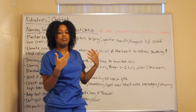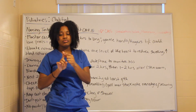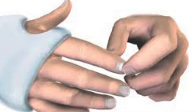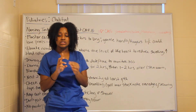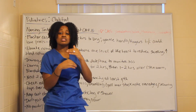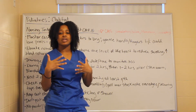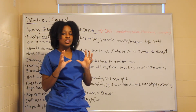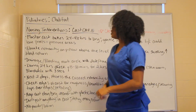Think of it like wrapping a string tightly around your finger — circulation becomes compromised, swelling occurs, color turns bluish, and sensation is lost. When you unwrap it, color returns and swelling goes down. A cast acts the same way — if there's tightness, you must ensure the patient can move their fingers and that circulation and sensation are not compromised.